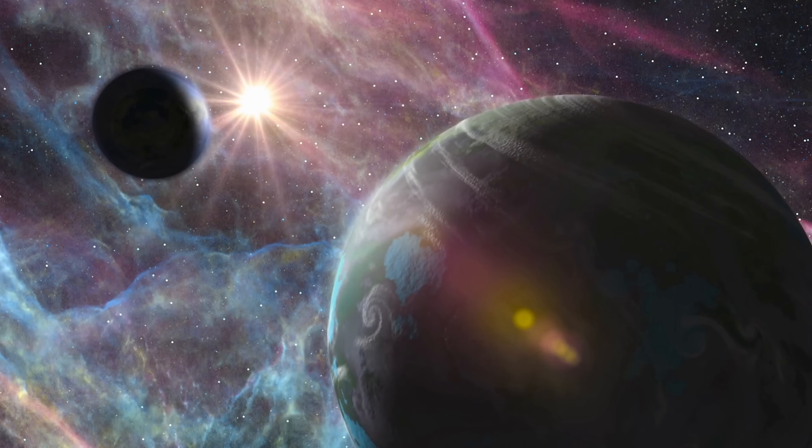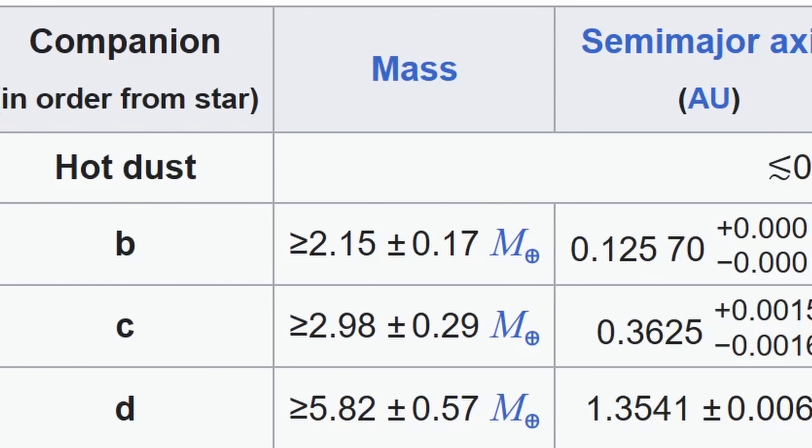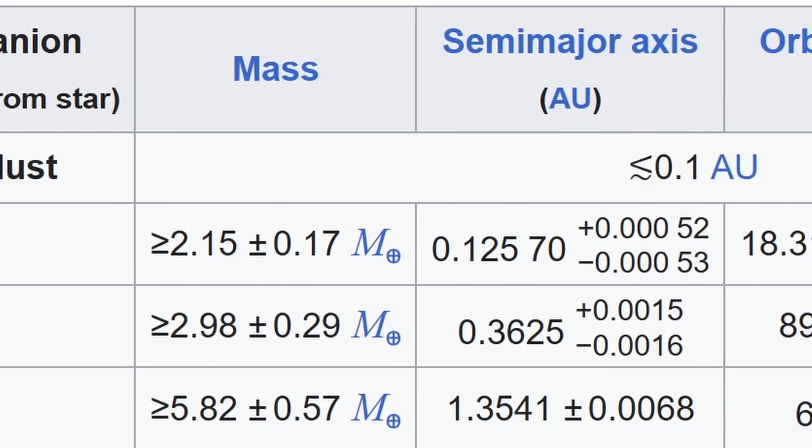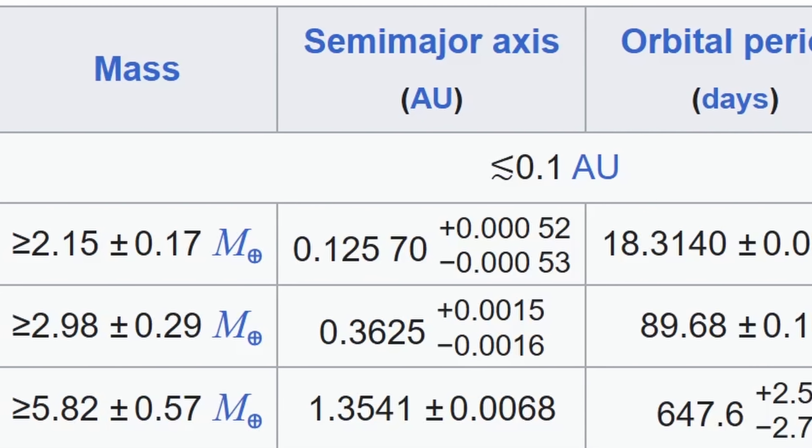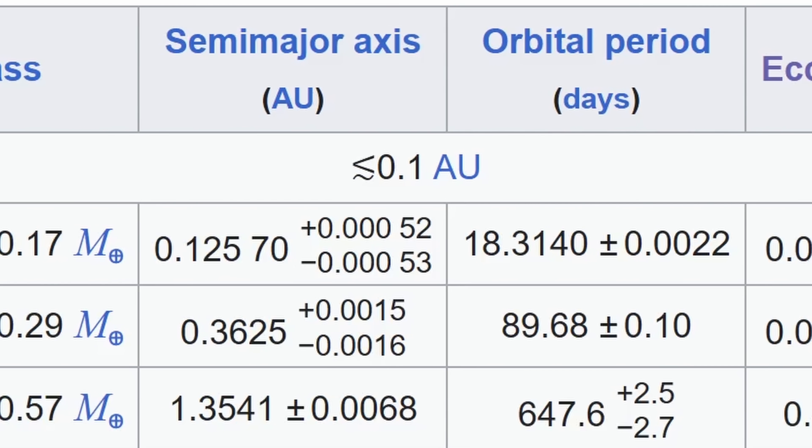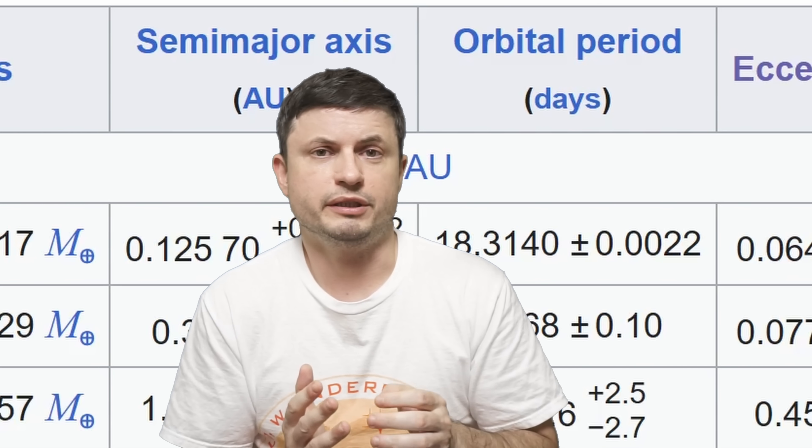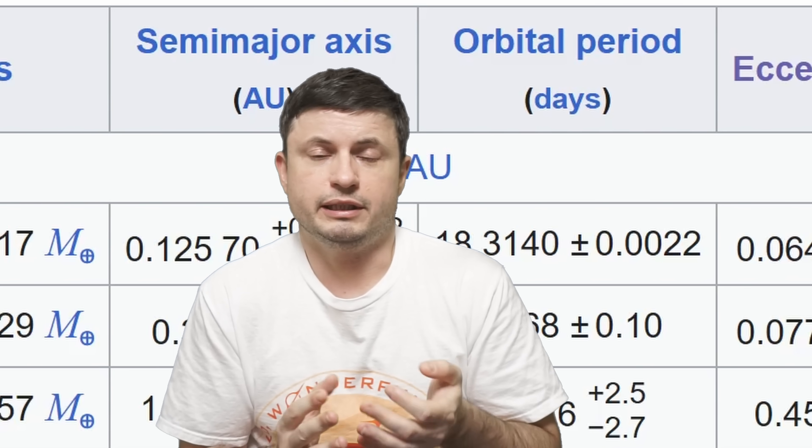Likewise, we can now confirm two of the closer planets to the star, both a little bit more massive than planet Earth, and one orbiting every 18 days, one orbiting every 90 days, with both of these planets basically being super-Earth and very likely extremely hot.